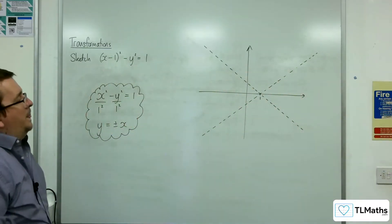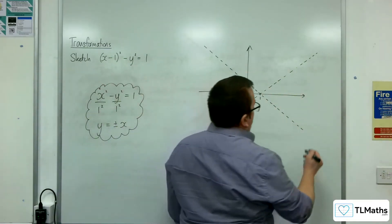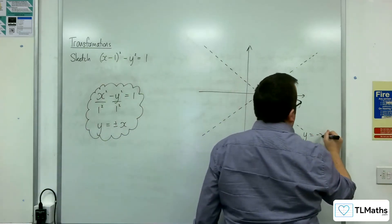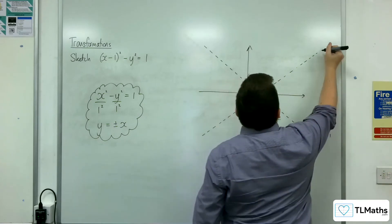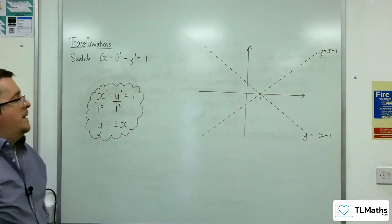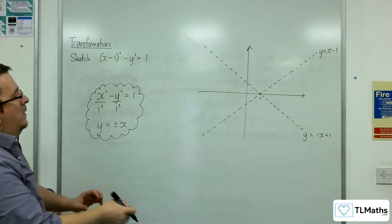So these are my two asymptotes. This one would be y equals minus x plus 1, and this one would be y equals x minus 1.